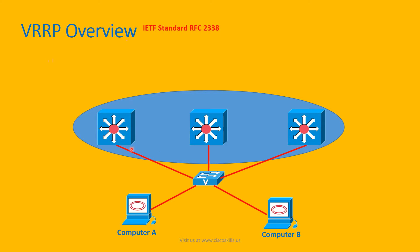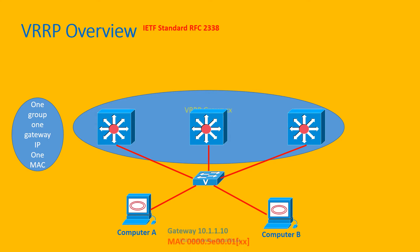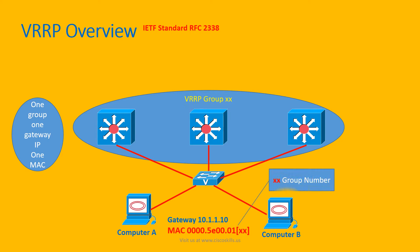In the group, if the master router is down, the backup router will take over to serve clients. Here are some of the characteristics for VRRP. First of all, we can configure multiple groups, but in one group, you can configure only one gateway virtual IP and one virtual MAC address — just like HSRP.